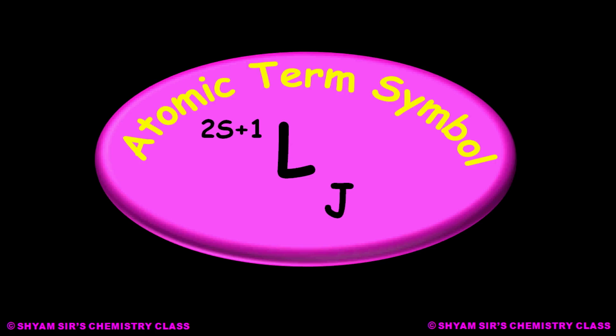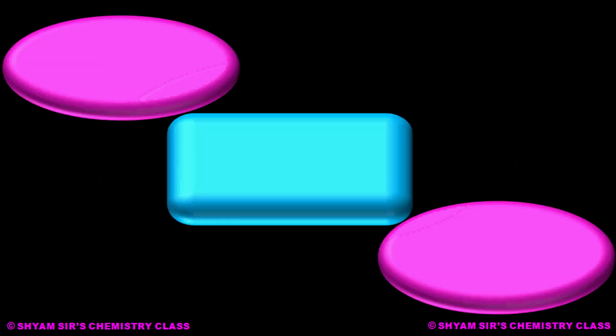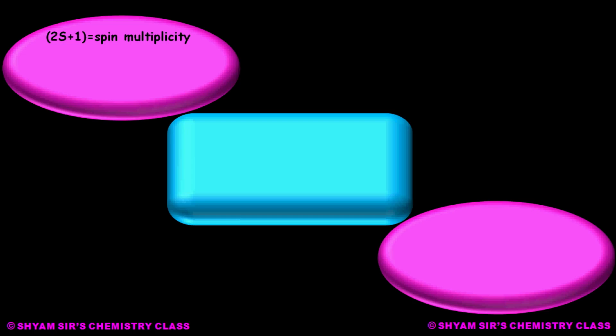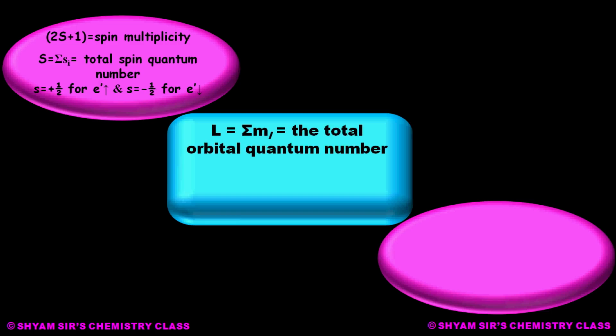I have represented the atomic term symbol in the same format as we normally write it. What is 2S+1? It is the total spin multiplicity. And what is S? S equals the summation of individual spin quantum numbers s_i. S equals plus one-half for an electron with up spin, whereas S equals minus one-half for an electron with down spin.